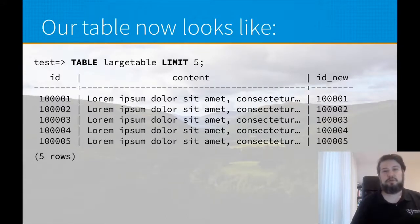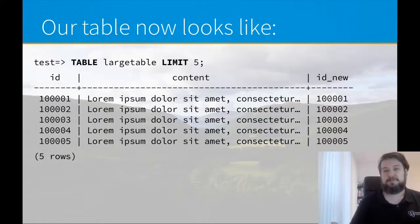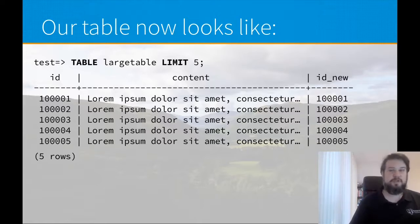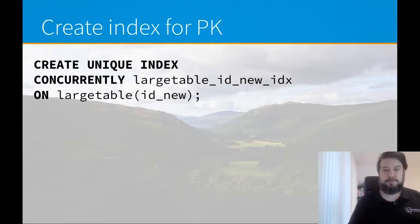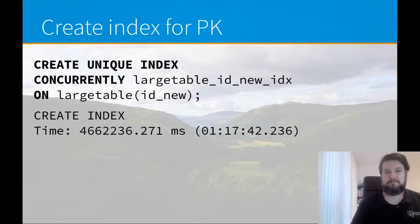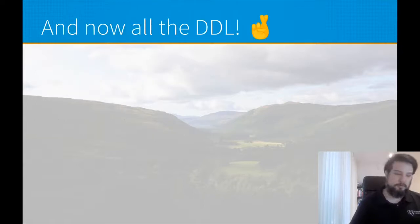So what does our table look like now? It has an ID column, the content it had, and an id_new column which is identical but is bigint instead of integer. Now we need to create the index for our primary key: CREATE UNIQUE INDEX CONCURRENTLY, named large_table_id_new_index, on our large_table on the new ID column that is bigint. Index creation takes an hour and 17 minutes, and now we haven't really made any changes to the table yet.